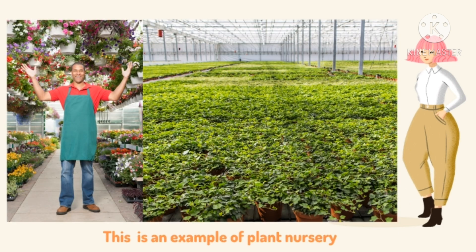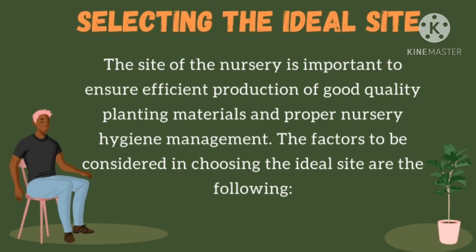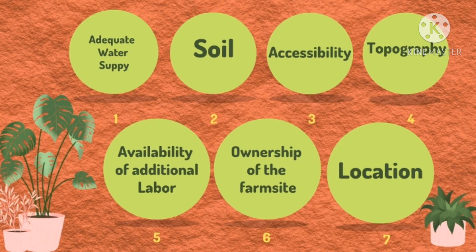By the way, this is an example of a plant nursery. Now, let's go into selecting the ideal site. The site of the nursery is important to ensure efficient production of good quality planting materials and proper nursery hygiene management. There are 7 factors to consider in choosing the ideal site.